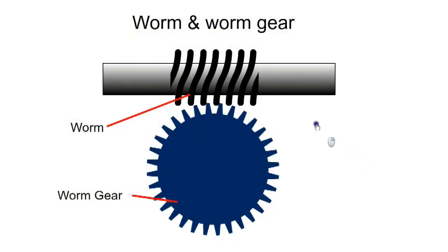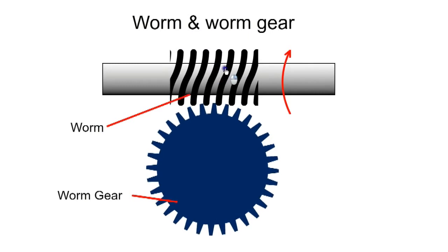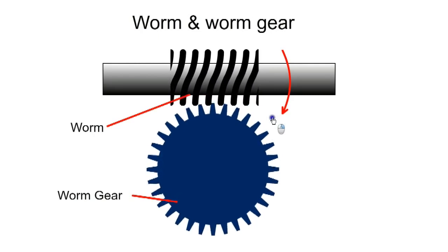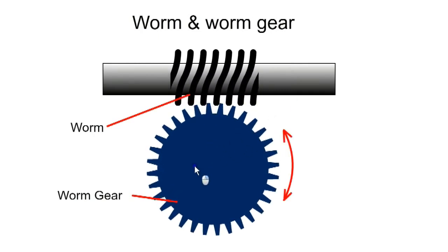The word Torsen is derived from torque sensing. The principle is based on a worm and worm gear. When the worm is rotated, it drives the worm gear, but the gear cannot drive the worm.